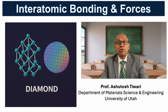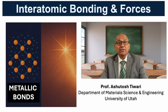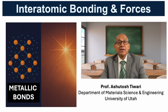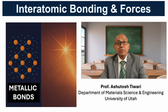The directionality of covalent bonds explains why these materials are hard but often brittle. Finally, metallic bonds. In metals, atoms release some of their valence electrons into a shared sea of delocalized electrons. The resulting positive ions are held together by this electron cloud. This explains the ductility, malleability, electrical conductivity and characteristic shine of metals like copper, aluminum and iron.